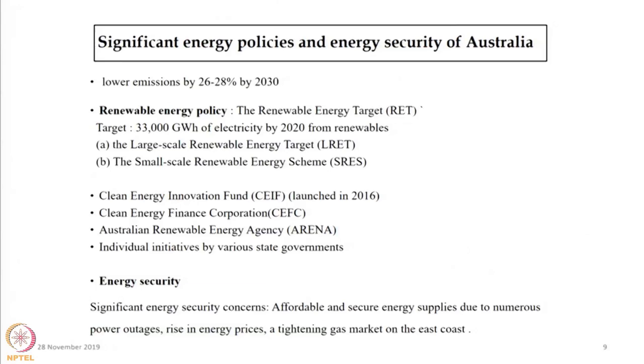Regarding significant policies, Australia has a target to reduce 26 to 28 percent of CO2 emissions by 2030. Australia also has a Large Scale Renewable Energy Target and a Small Scale Renewable Energy Scheme. The Large Scale Renewable Energy Target says that those using more energy for industrial operations should source a particular amount from renewables. The Small Scale Renewable Energy Scheme supports people using renewable energy sources by providing subsidies. The Clean Energy Finance Corporation and Australian Renewable Energy Agency also provide funding to agencies and industries working on renewable energy.